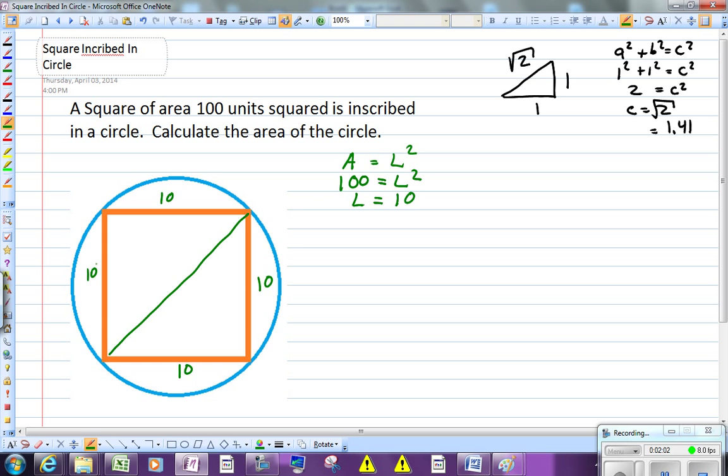Here's where this little trick we just found out, 1, 1 square root of 2 comes into play. I can very quickly say that since the sides are 10, the diagonal must be the square root of 2 times bigger, or square root of 2 times that, so that's 10 square root of 2.